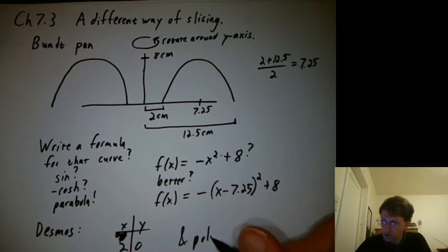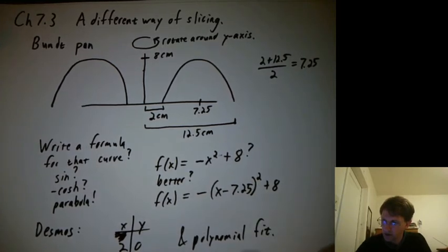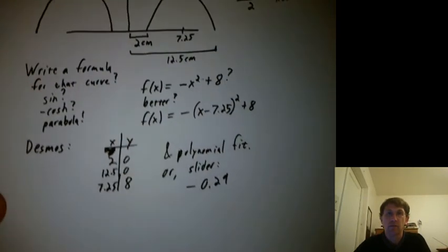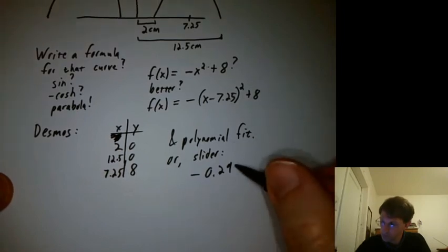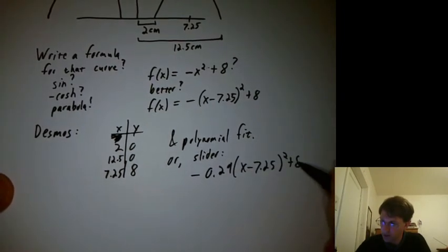And we did a polynomial fit. Or we did a slider and got negative 0.29 times x minus 7.25 squared plus 8.